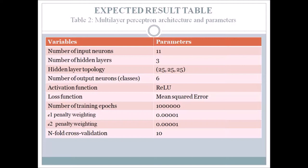We are going to look at the expected results — what are we supposed to see and learn? We are supposed to learn how to classify flow patterns into annular, wavy, or others. To classify, we need specific architectural parameters. The study will produce a table showing all the various parameters and their values, similar to results from related literature.